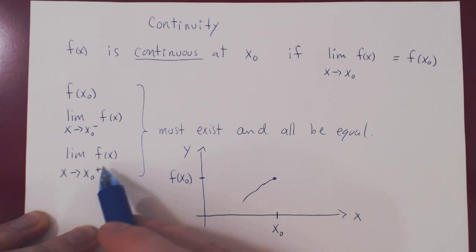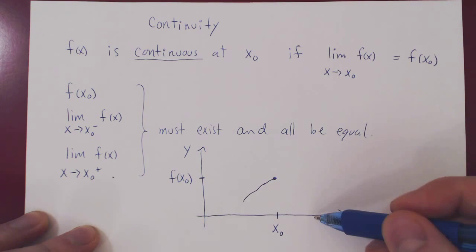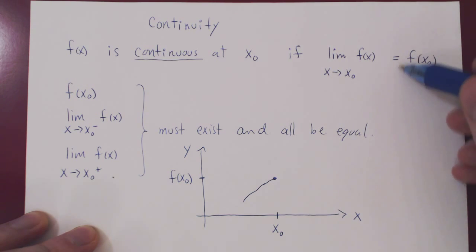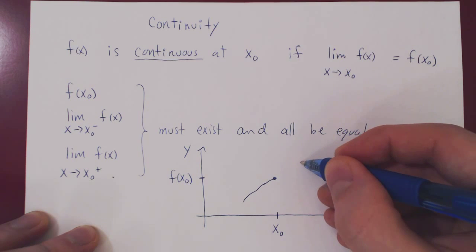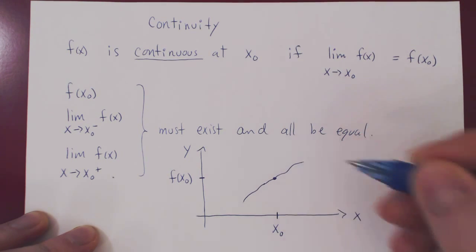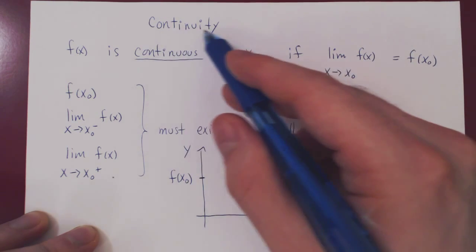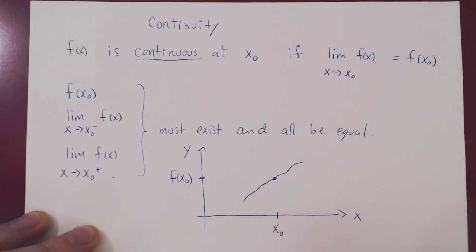And the same must be true from the right. As we are letting x approach x0 from the right, the function f of x must also be approaching the value of the function at the point x0. And so you see that all this implies, hence the word continuity, means that there is no break in the function at x0.